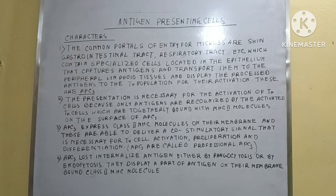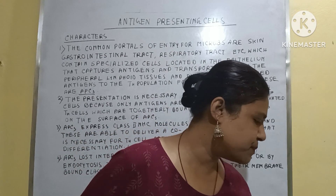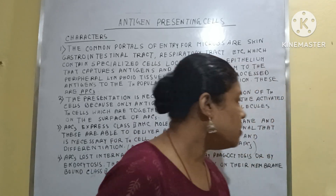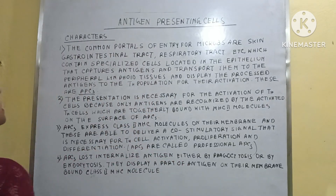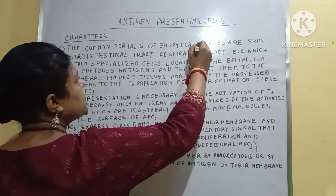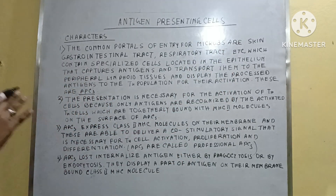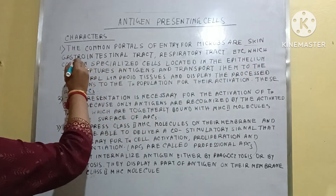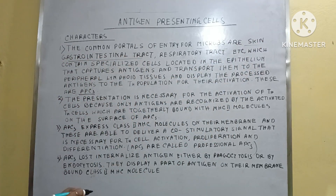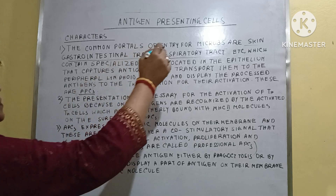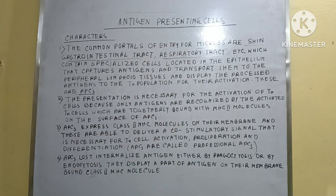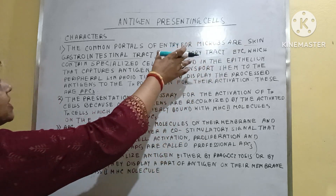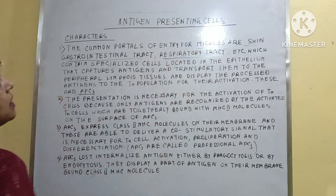The common portals of entry for microbes are the skin, gastrointestinal tract, and the respiratory tract. Microbes enter within our body through the skin, gastrointestinal tract, or through the respiratory tract. These are the main areas through which microbes try to enter within our body, and these areas generate enough landing areas in these spaces.